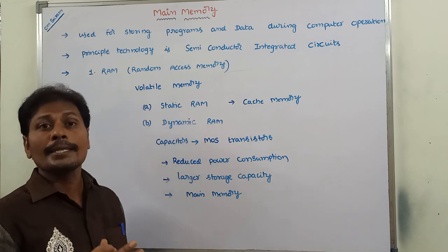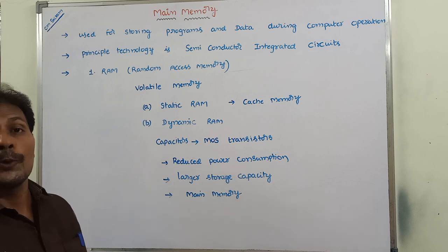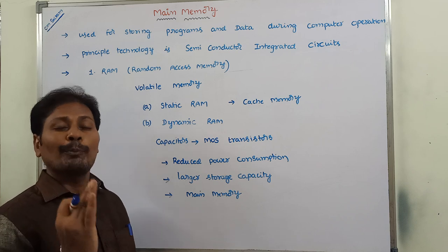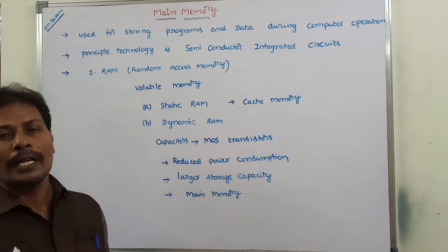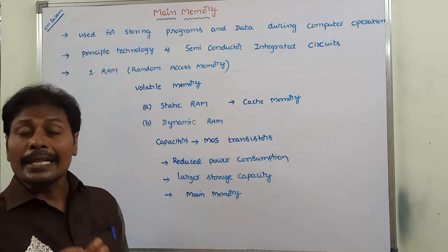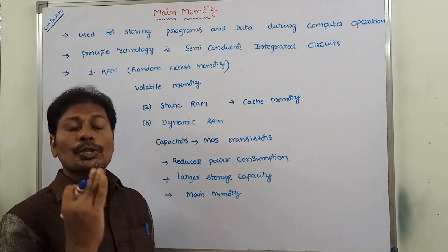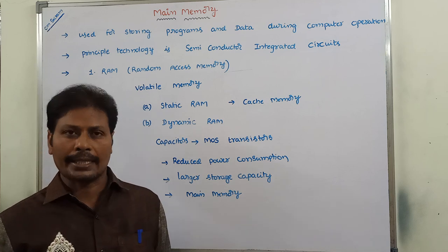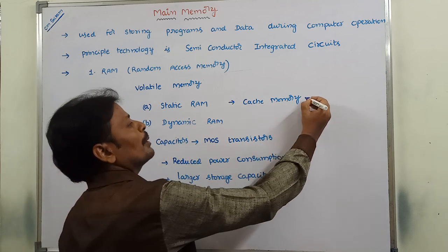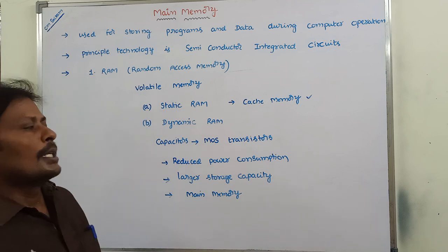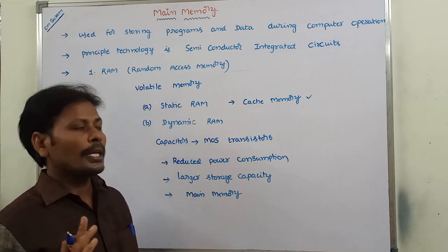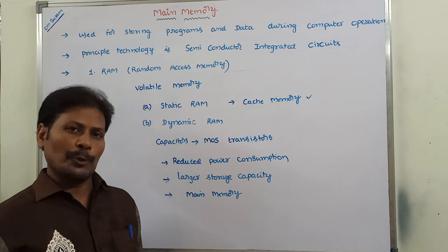Static RAM consists of internal flip-flops that are used for storing binary information. A flip-flop is a storage device used for storing binary information. Static RAMs are easier to use and have shorter read and write cycles. The major application of Static RAM is implementing cache memory. Static RAMs are mainly used for smaller storage capacity and larger power consumption.